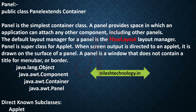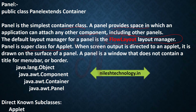Next is Panel. Panel is the simplest container class. A Panel provides a space in which an application can attach any other component, including other panels. FlowLayout manager is the default layout of Panel. Panel is also the superclass for Applet, and FlowLayout is the default layout of Applet as well.